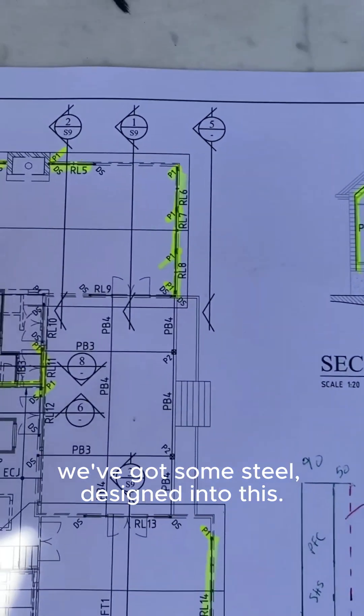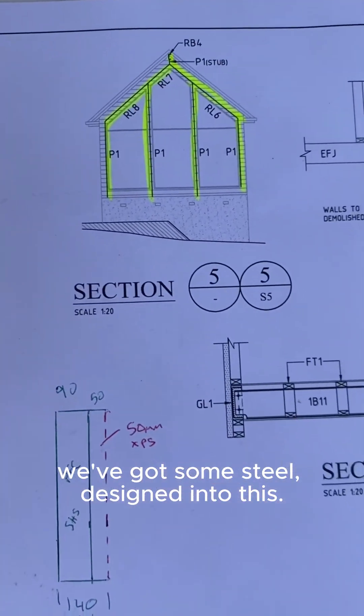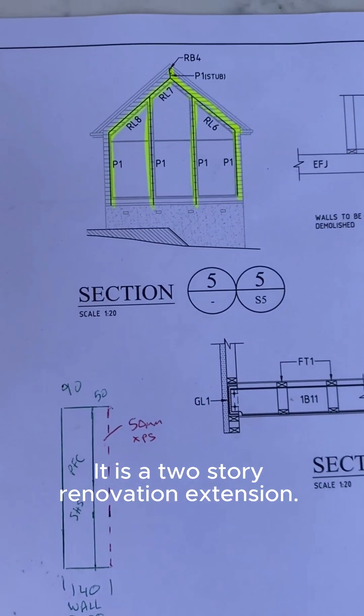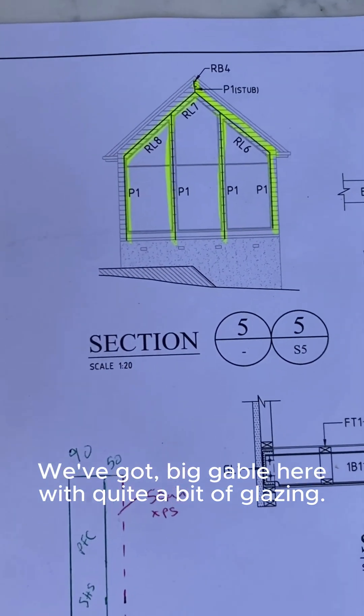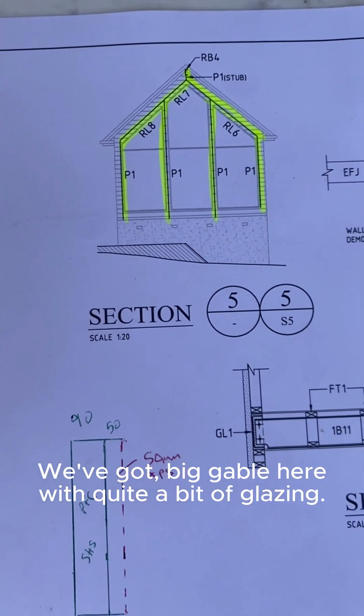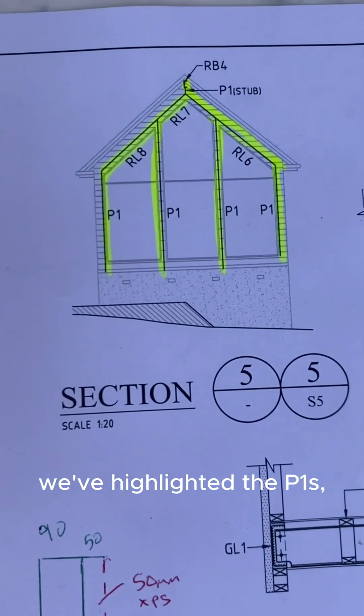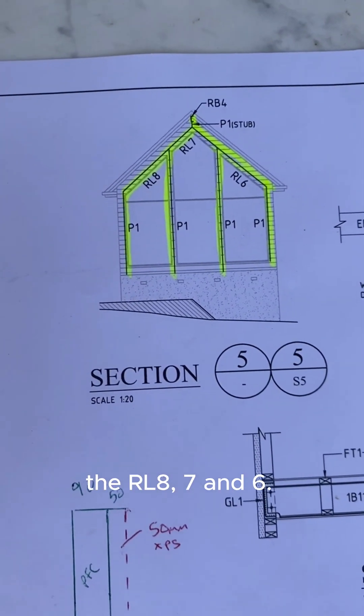One little thing that we're just planning on, we've got some steel designed into this, it is a two storey renovation extension. We've got a big gable here with quite a bit of glazing, so we've got a portal frame. As we can see we've highlighted the P1s, the RL8, RL7 and RL6.